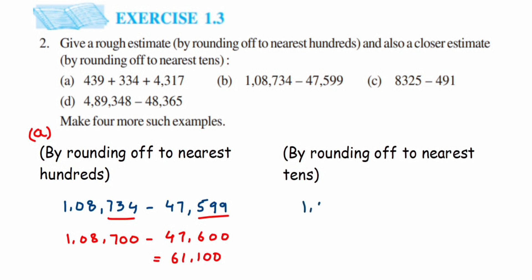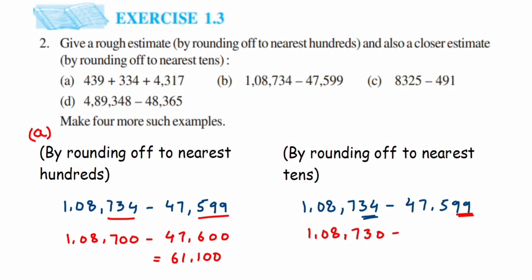Now rounding the same question to nearest tens: 1,08,734 minus 47,599. For 34, it lies between 30 and 40 and is closer to 30, so 1,08,734 becomes 1,08,730. For 99, it is closer to 100 — since we can't write 100 in the tens place, it carries over, making 47,599 become 47,600. Subtracting: 1,08,730 − 47,600 = 61,130.